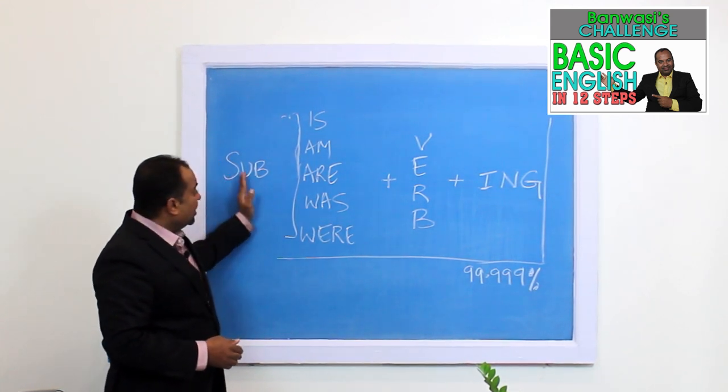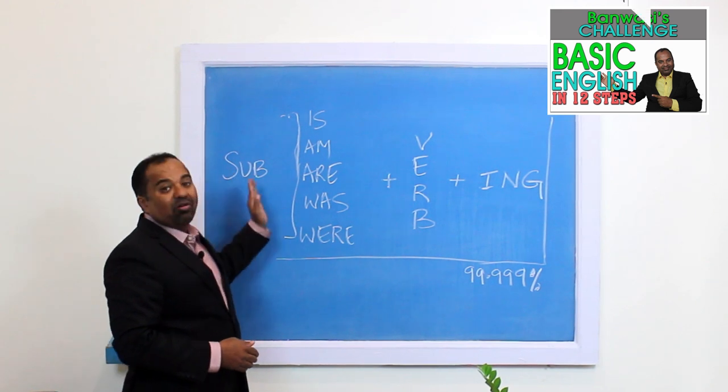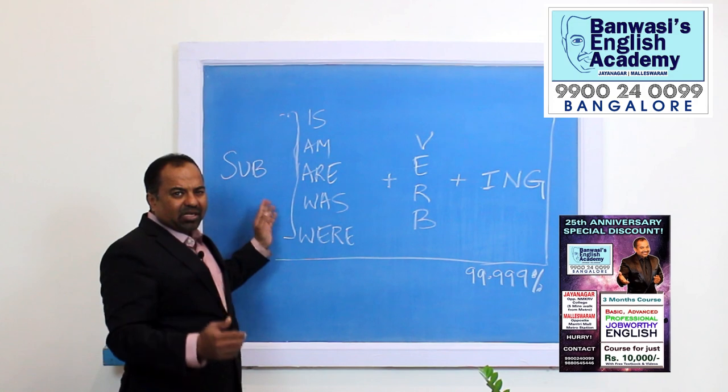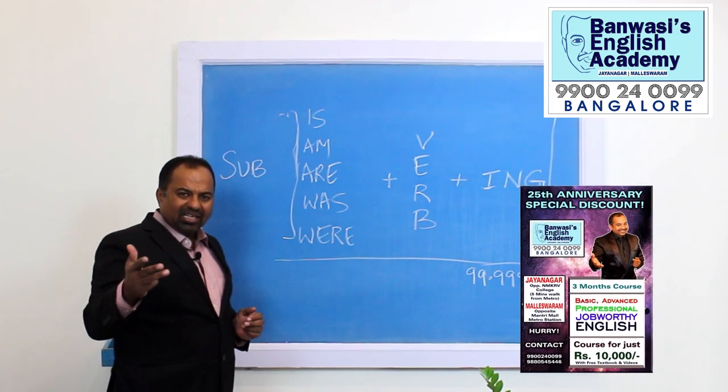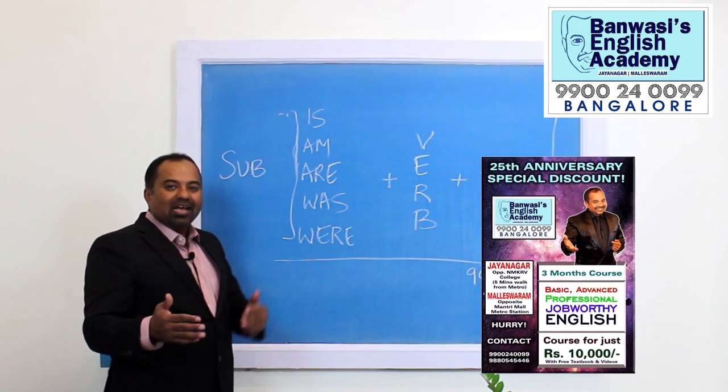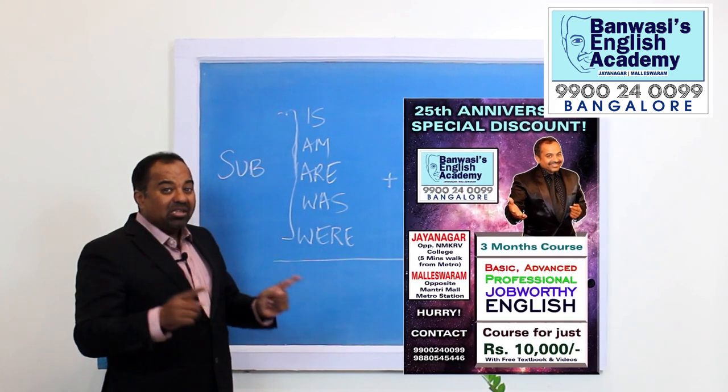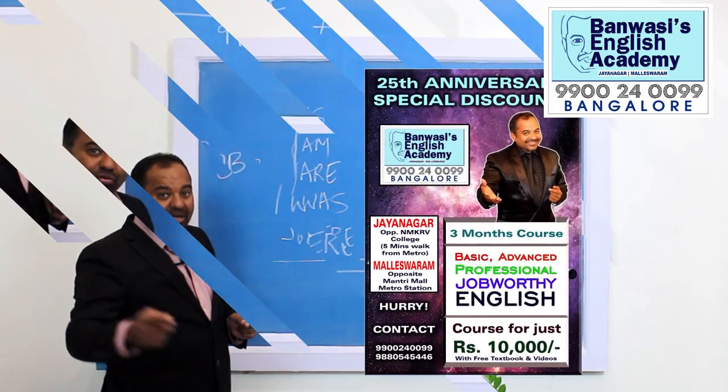What are subjects? Subjects are I, you, he, she, it, we, they, names like Ravi, Radha, Ravi and Ramesh, as well as animals, plants, machines, things, places, fruits, vegetables. All of these are subjects.